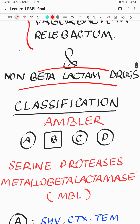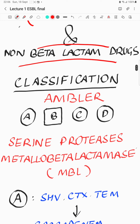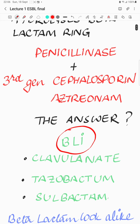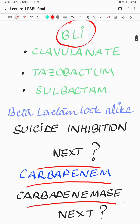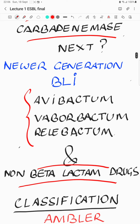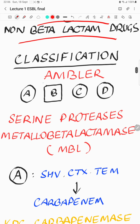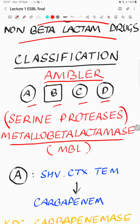Looking at the classification — interestingly, the ESBL classification also includes carbapenemases. Classically, ESBL meant it hydrolyzes a beta-lactam antibiotic and can be taken care of by the addition of a BLI, but now that definition is extended to include carbapenemases as well. The Ambler classification is most popular, based on the structure of the beta-lactamase. We have four classes: A, B, C, and D. Classes A, C, and D are serine proteases — their active site has serine — while class B has a metal ion and is known as metallobeta-lactamase (MBL).